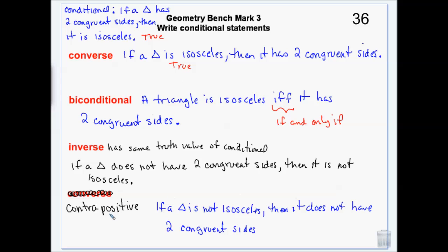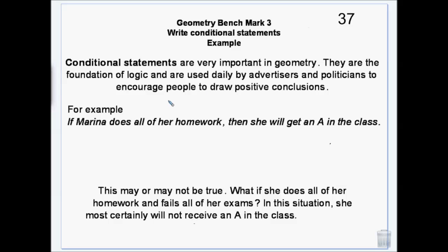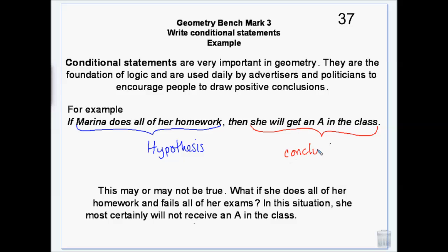The contrapositive may or may not be true, and a converse may or may not be true — it just depends. We need to be able to identify hypotheses and conclusions. Hypotheses come after the word 'if'; conclusions come after the word 'then,' or they're whatever part is left over after the 'if' part has been identified. Sometimes they're at the beginning. This might or might not be true. For example: if she does all her homework but fails all her tests and didn't get an A, that's a counter example.